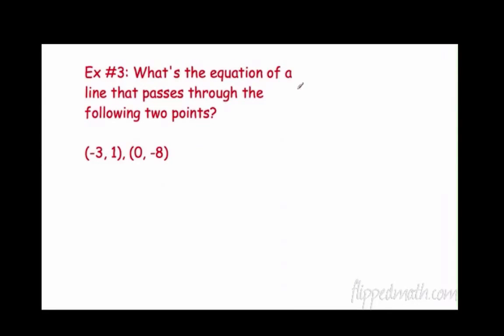What's the equation of a line that passes through the following two points? Negative 3, 1 and 0, negative 8. So let's talk first thing. What do I need? I need this equation, y equals mx plus b. What do I need? Thank you, Zach. I need an m. Perfect. Alright, Ramstein and Baumholder, thank you. I need a b.